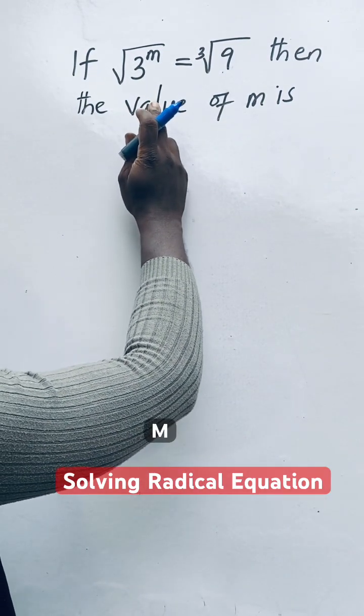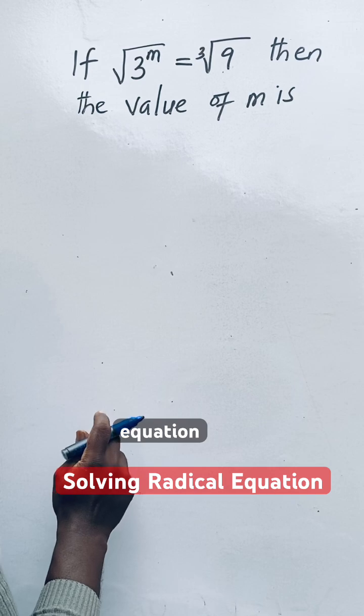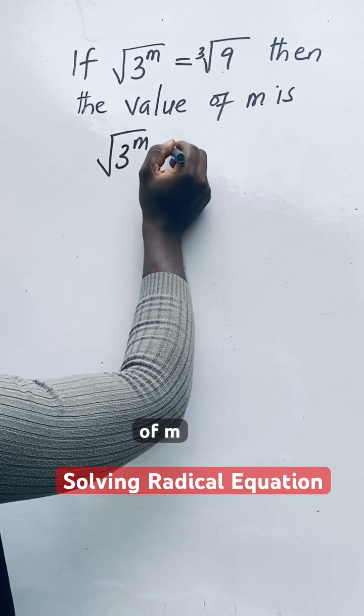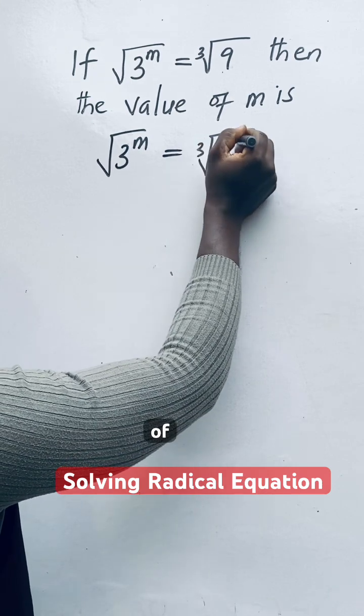Let's find the value of M in this radical equation. Square root 3 raised to the power of M equal to the cube root of 9.